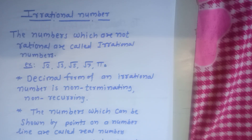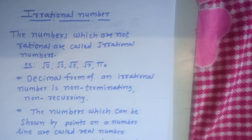But the decimal form of irrational numbers is non-terminating, non-recurring. The numbers which can be shown by a point on a number line are called real numbers. All rational and irrational numbers are real numbers. We can show irrational numbers on the number line also.